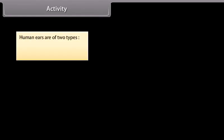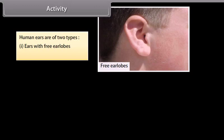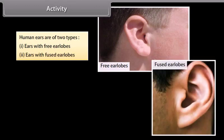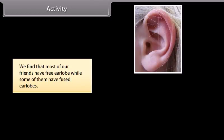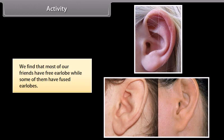Activity. Human ears are of two types: ears with free ear lobes and ears with fused ear lobes. We can understand the process of inheritance more clearly by observing ears of all the students in the classroom. We find that most of our friends have free ear lobe, while some of them have fused ear lobes.